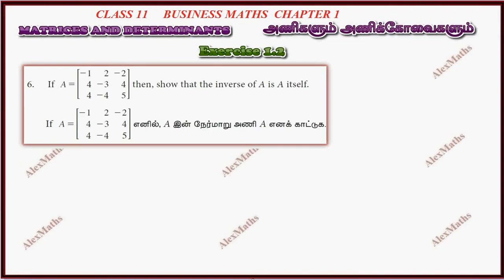Hi students, this is Alex here. Exercise 1.2, question number 6. If A is a 3 row, 3 column matrix, show that the inverse of A is A itself.